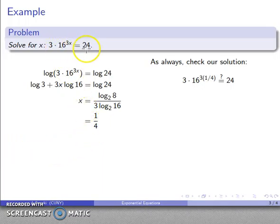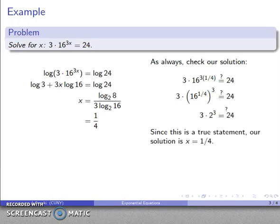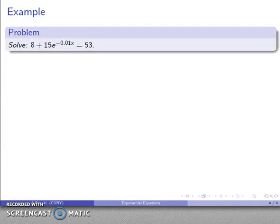As always, we should check our solution just to make sure that everything was done correctly and that we haven't introduced an extraneous solution. If I let x be one quarter, do I actually get 24? I'll substitute that in. On the left hand side, I have a product. 16 to power one quarter is 2, so this is going to be 2 to the third times 3. 3 times 2 to the third—that's 24. It's a true statement, so our solution is x equals one quarter.